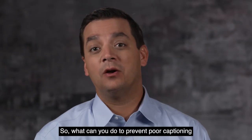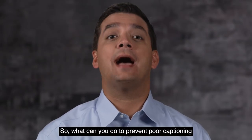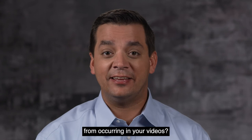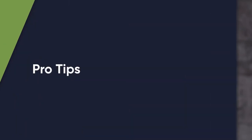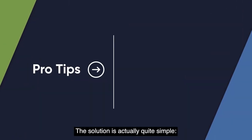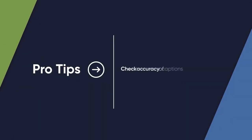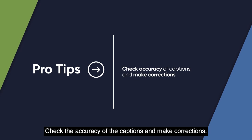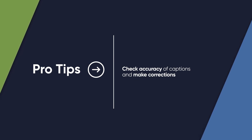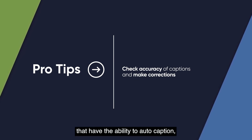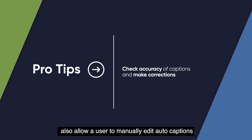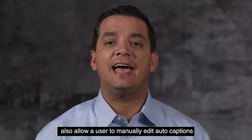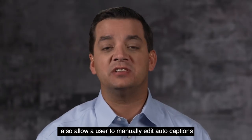So, what can you do to prevent poor captioning from occurring in your videos? The solution is actually quite simple: check the accuracy of the captions and make corrections. Most video hosting sites that have the ability to auto-caption also allow a user to manually edit auto-captions on their posted videos.